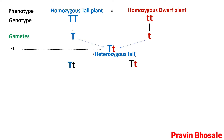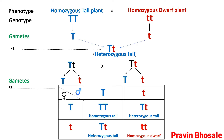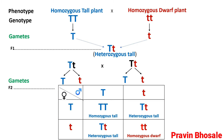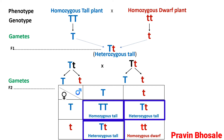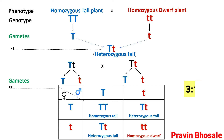Now the results of F1 generation are self-crossed, which is called inbreeding or selfing. So gametes will be capital T, small t, capital T, small t. Let's see the crossing by the checkerboard method, that is the Punnett square method. In F2 generation, out of four plants, three plants are tall and one plant is dwarf. So the phenotypic ratio will be 3 is to 1.